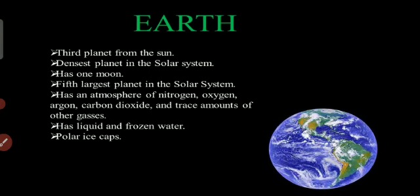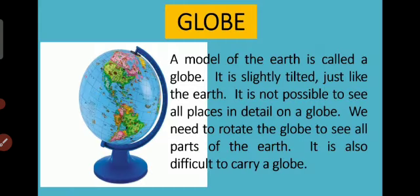Earth has liquid and frozen water as well. The earth's shape is also described as geoid, which means earth-shaped, and any object with this shape is called a geoid. A globe is a model of the earth.